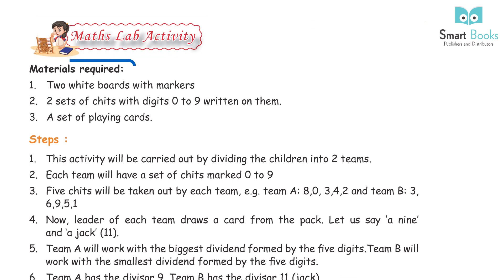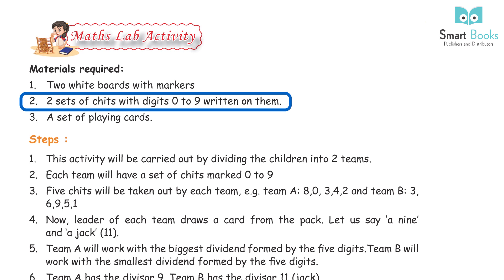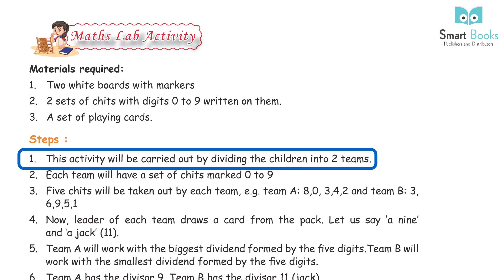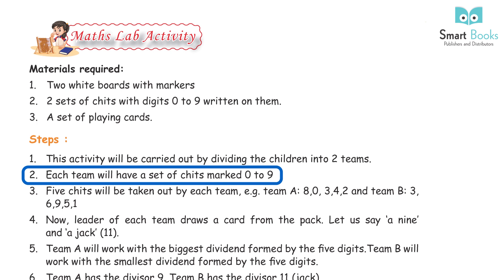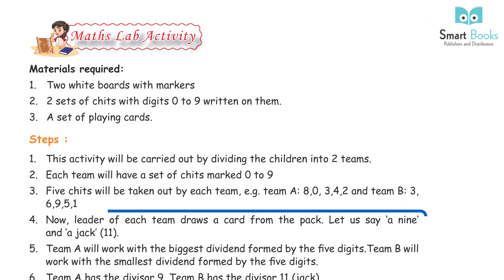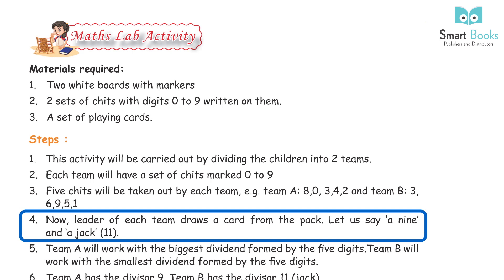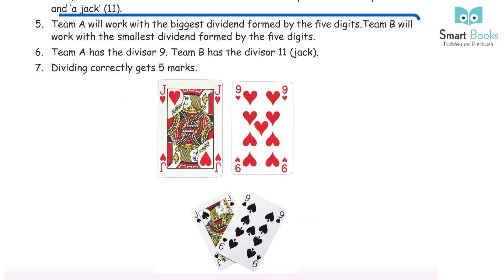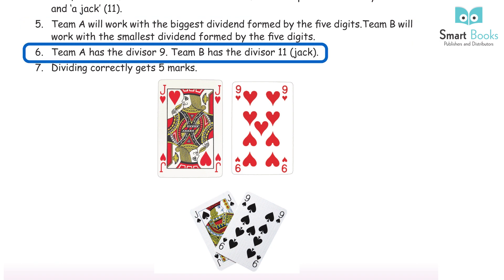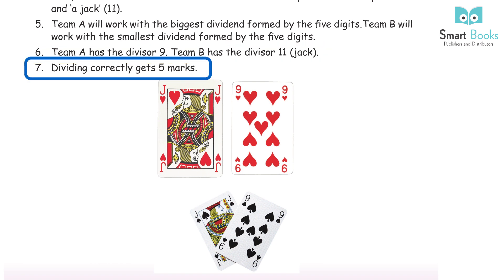Maths lab activity. Materials required: two whiteboards with markers, two sets of cards with digits 0 to 9 written on them, and a set of playing cards. Steps: divide children into two teams; each team gets a set of cards marked 0 to 9; each team picks five cards — for example, Team A gets 80342 and Team B gets 36951. The leader of each team draws a card from the pack, say 9 and Jack (11). Team A forms the biggest possible dividend from their 5 digits; Team B forms the smallest. Team A has divisor 9, Team B has divisor 11. Dividing correctly earns 5 marks.